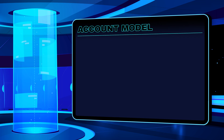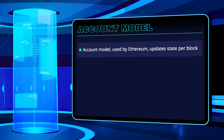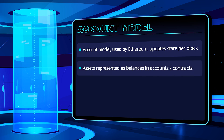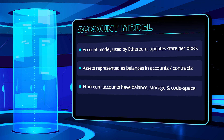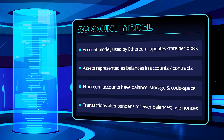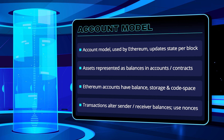In the account model, such as the one used by Ethereum, the state of the system updates after each block according to the transactions in that block. The assets are represented as balances within user accounts or smart contracts. Every account in Ethereum has a balance, storage, and a code space for calling other accounts or addresses. When a transaction occurs, nodes decrement the balance of the sender's account and increment the balance of the receiver's account. Each transaction has a nonce to prevent replay attacks, where a fraudulent transaction is submitted and executed more than once.